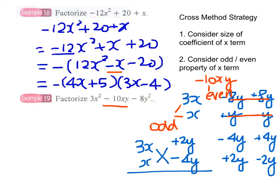To verify: 3x times -4y gives -12xy, and x times 2y gives +2xy. Adding them: -12 + 2 gives -10xy. Therefore, the answer is (3x + 2y)(x - 4y).